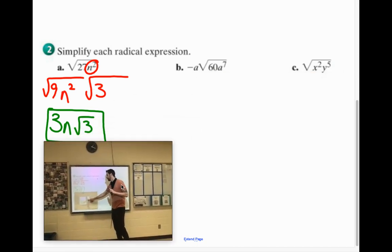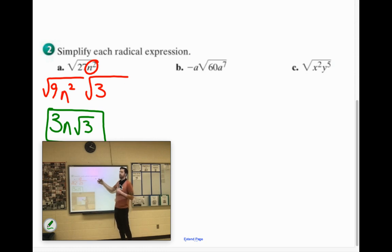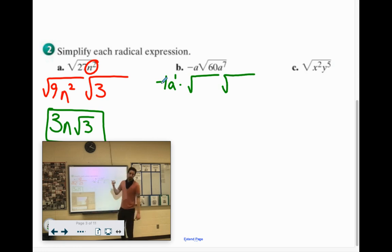Letter B. So think of negative a as like -1a or -1a¹ if you'd like. Now we're going to break up our √60. So 60 is 4 times 15. 4 is the perfect square. a⁷ is not perfect. It's not even. So we can put a⁶ here and the seventh one goes over here.